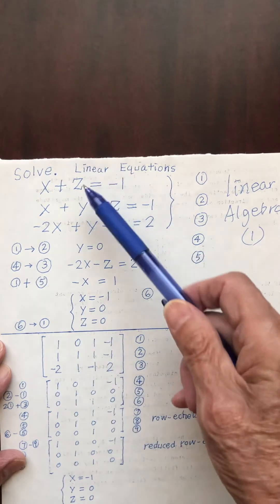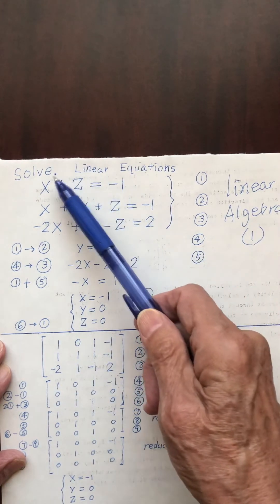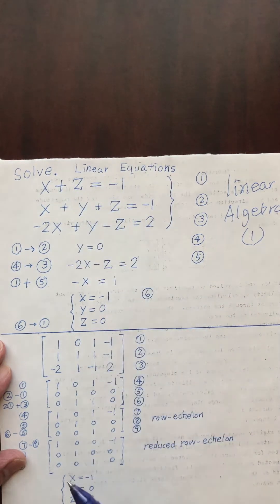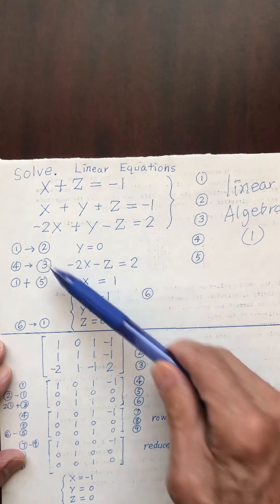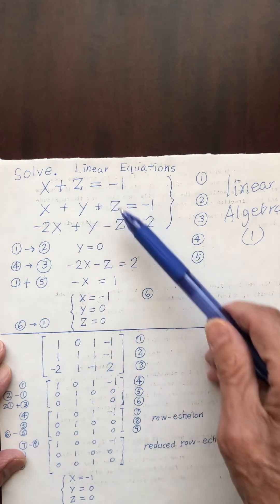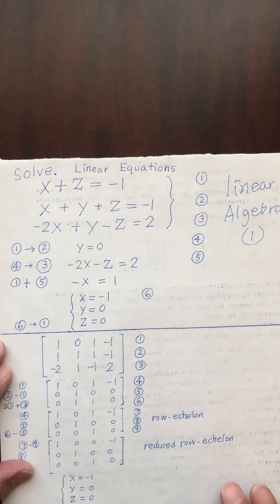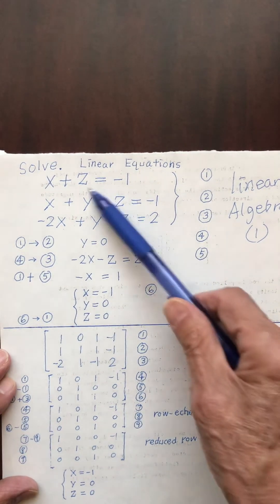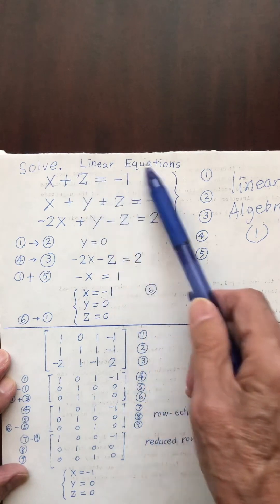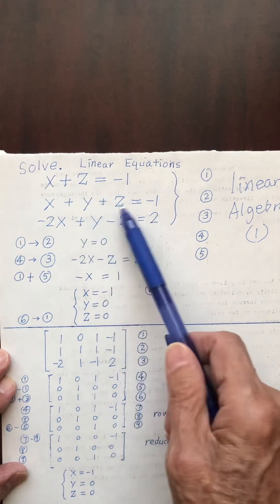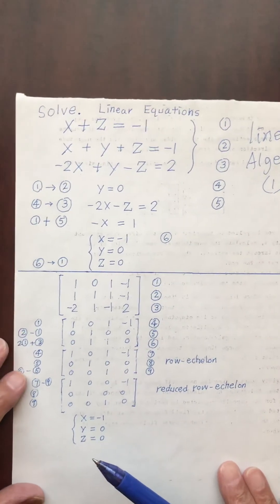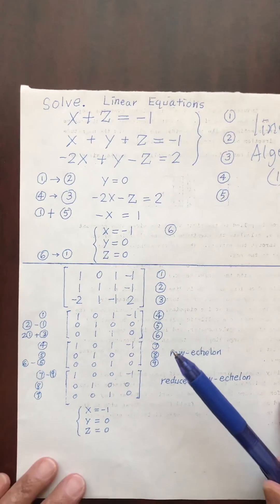That's the end of this linear equation — three unknowns, three equations. That's how we solve this, just by using algebra. Next, we can do the same question by using a matrix. Here is the matrix method.